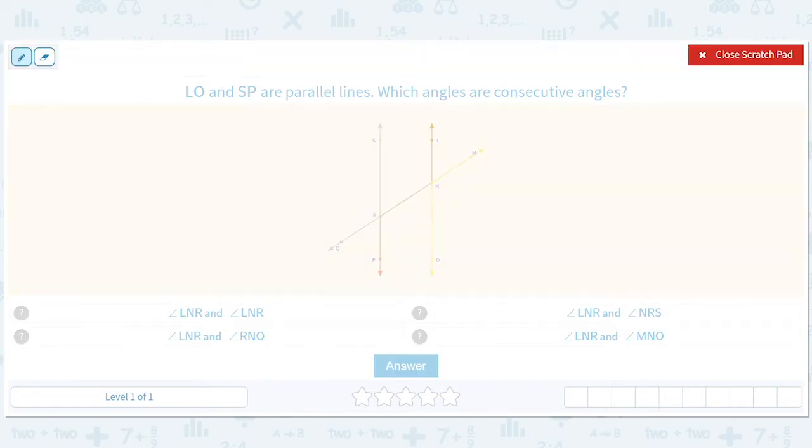Which angles are consecutive angles? Okay, so consecutive angles would be these angles. These aren't the same, but this angle and this angle are consecutive, right, or on the opposite side. So let's see what we've got here. LNR and LNR. Okay, that's not right. So this one is not right. Those are the same thing.